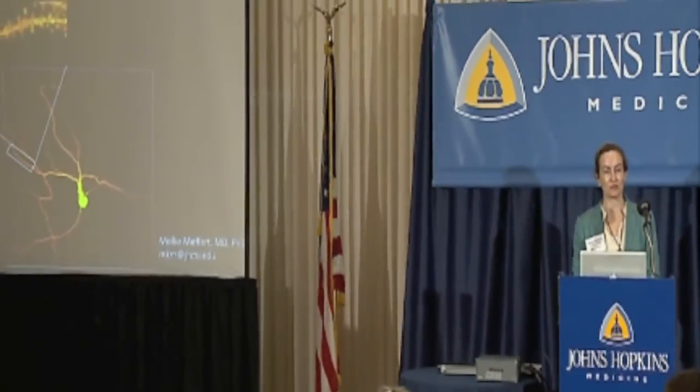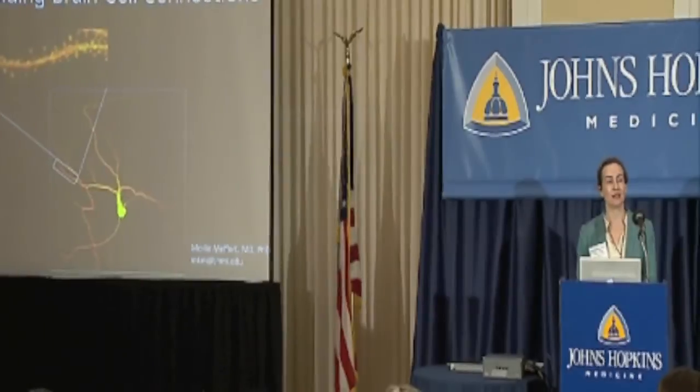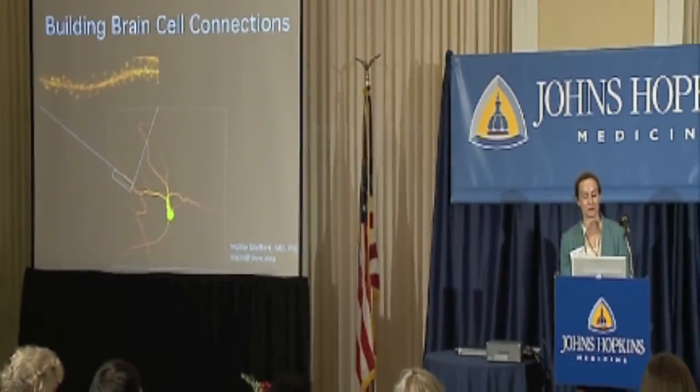Our laboratory is interested in particular in how these connections are actually formed. This is an image of a neuron from the hippocampus, a region you've already been hearing a lot about. If we zoom in, we can see these things that look like spines — they're actually called dendritic spines — and these are the receiving end of connections between neurons.